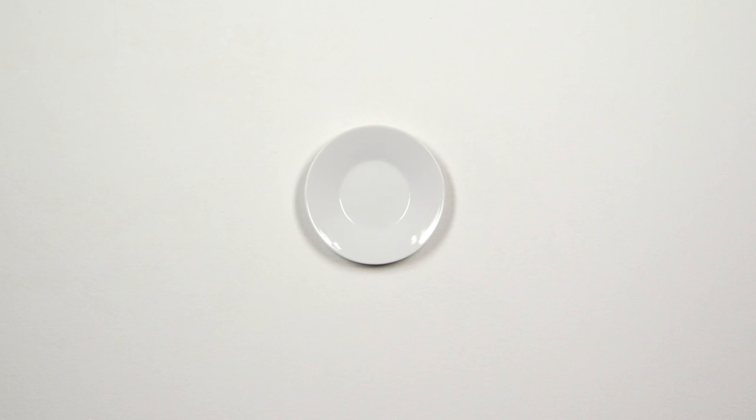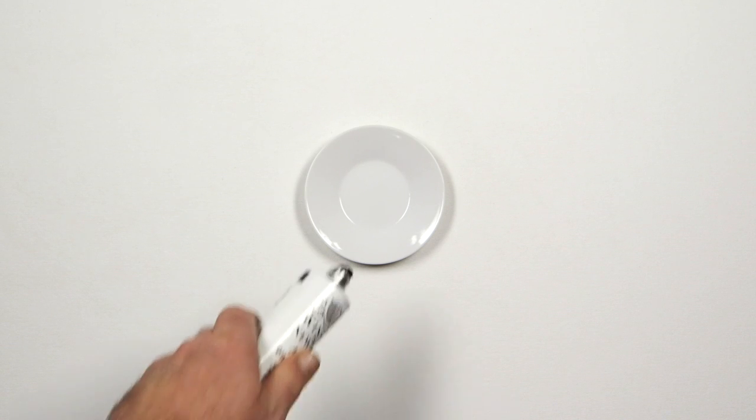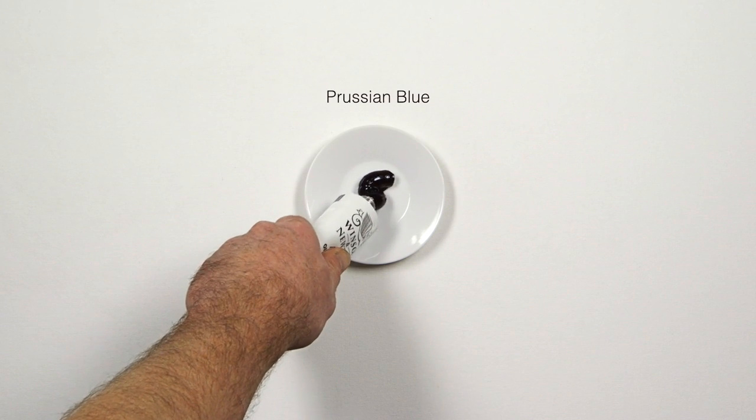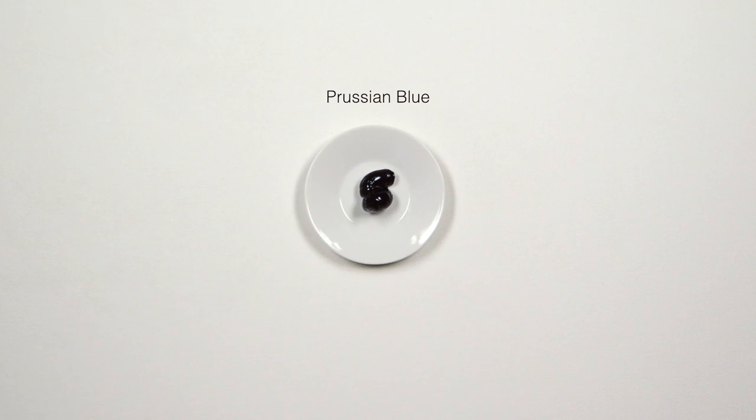Prussian blue is one of the first synthetic organic pigments, accidentally discovered by a scientist named Heinrich Diesbach while he was trying to develop a synthetic version of carmine red.